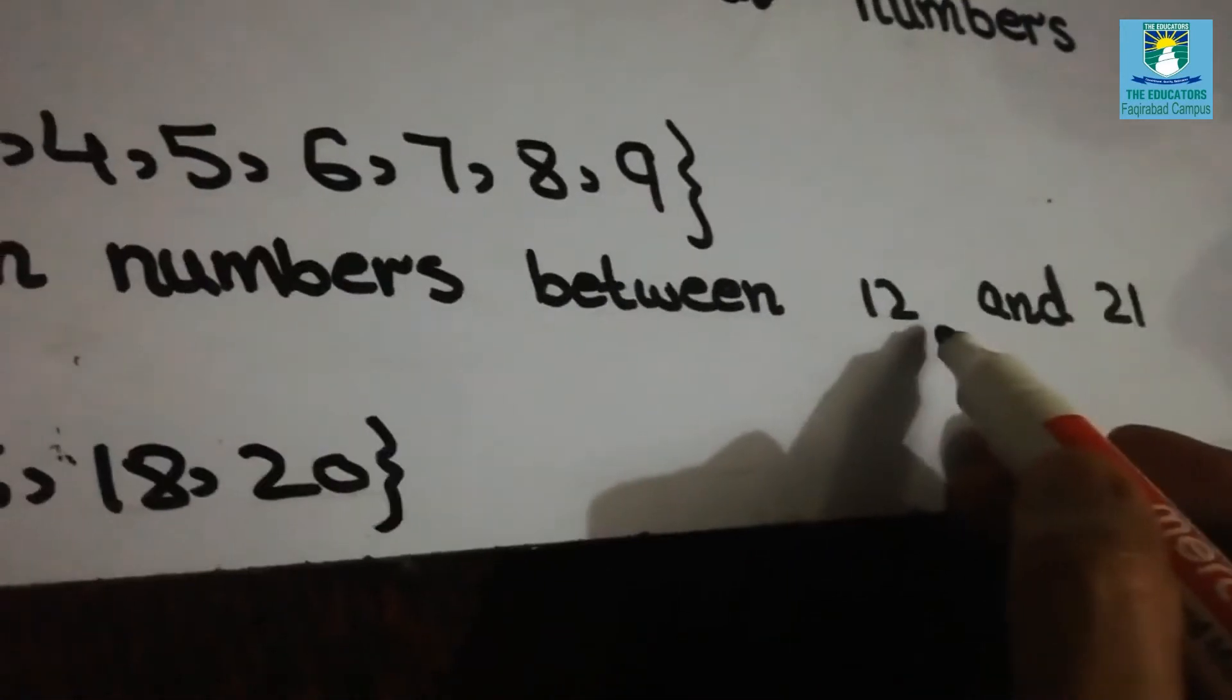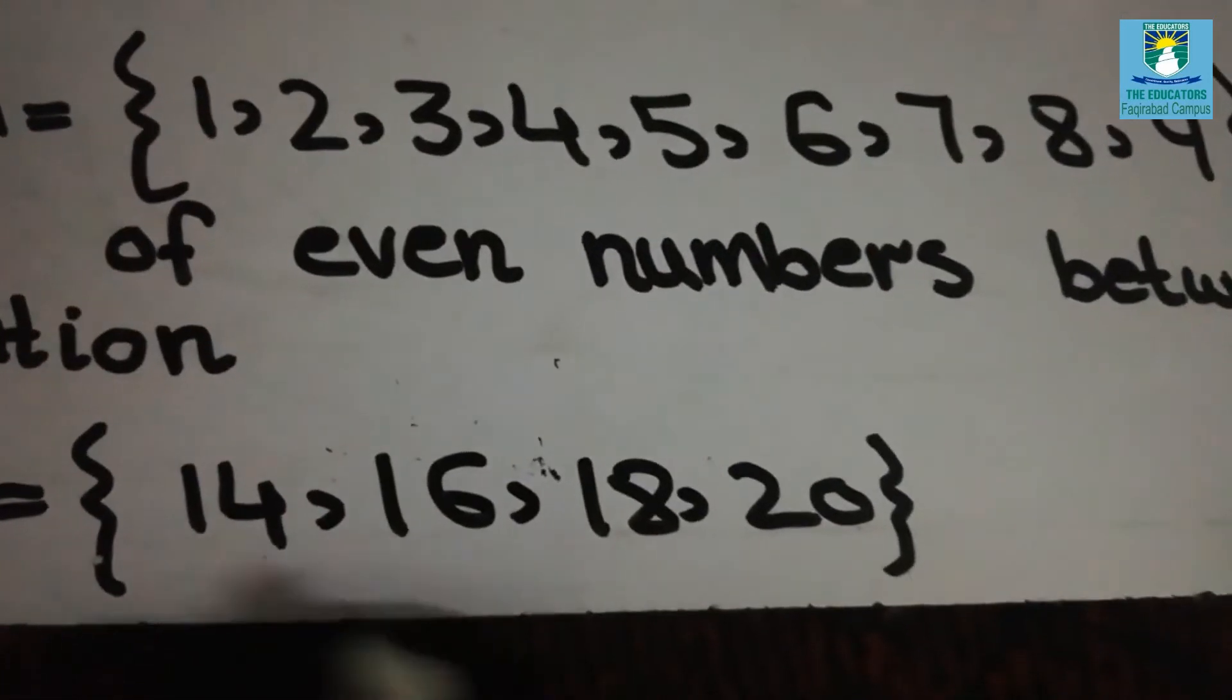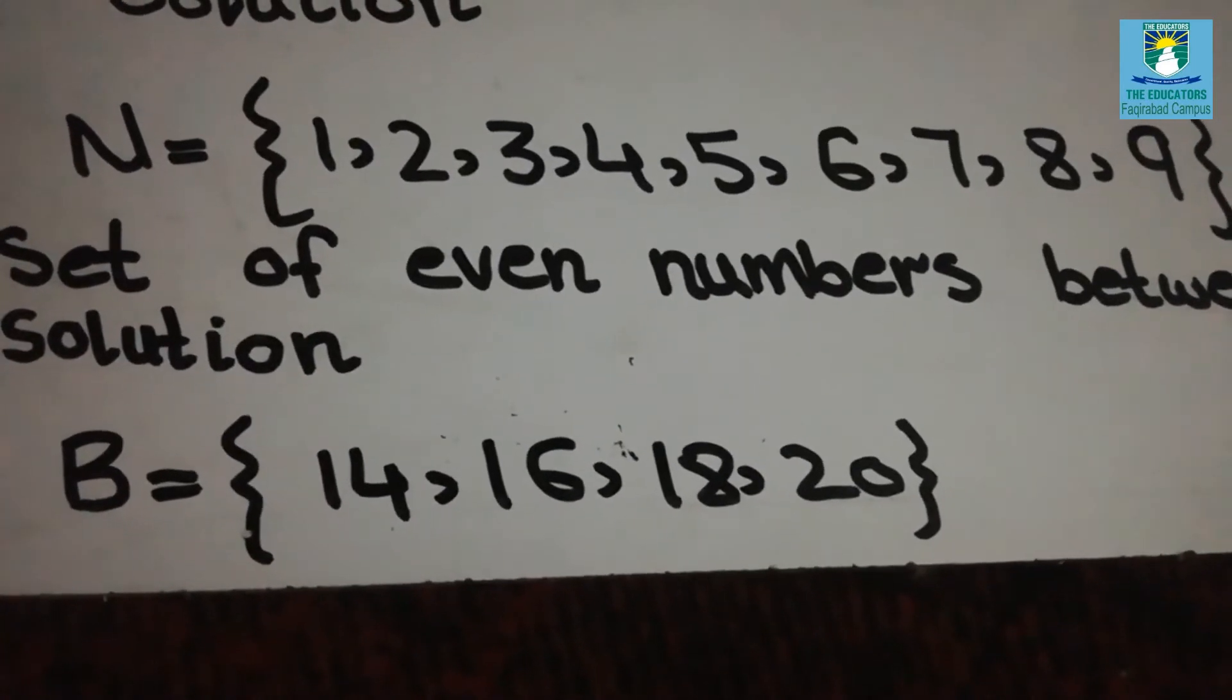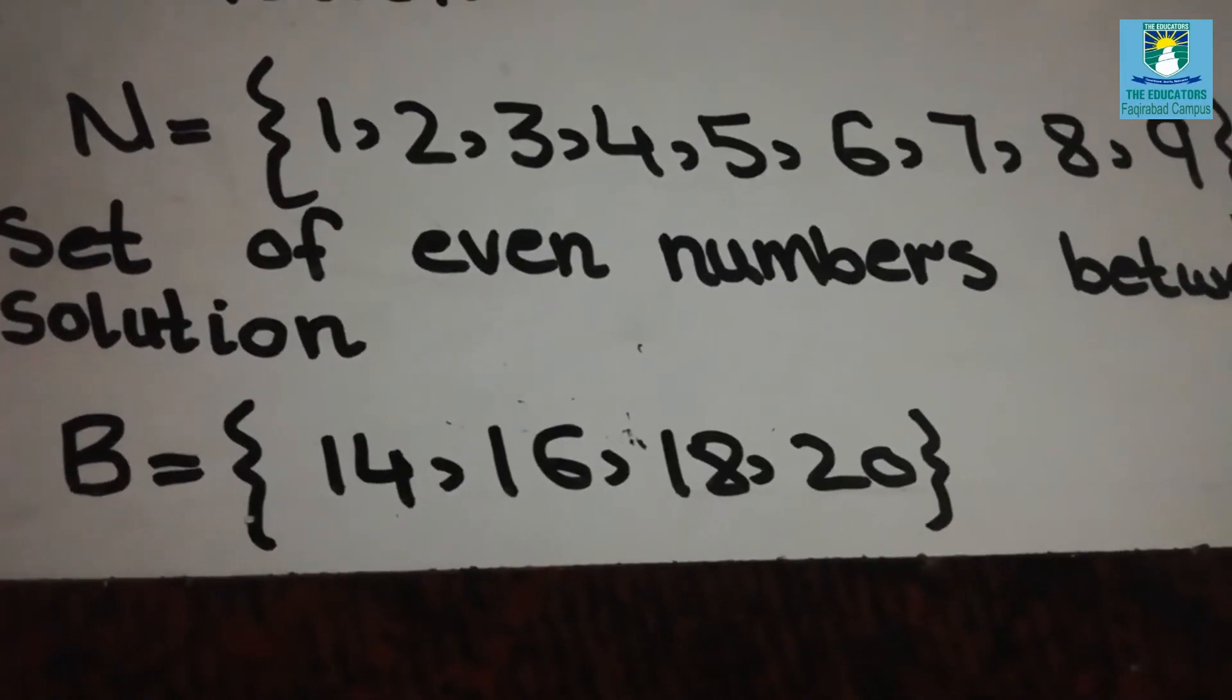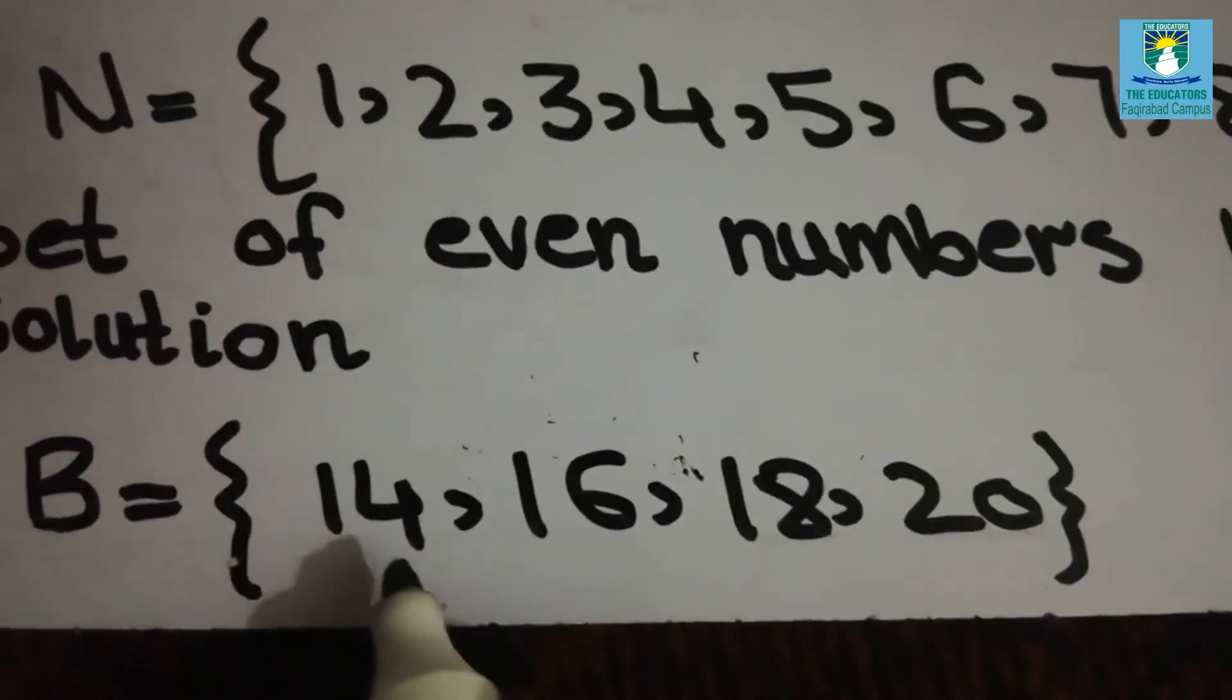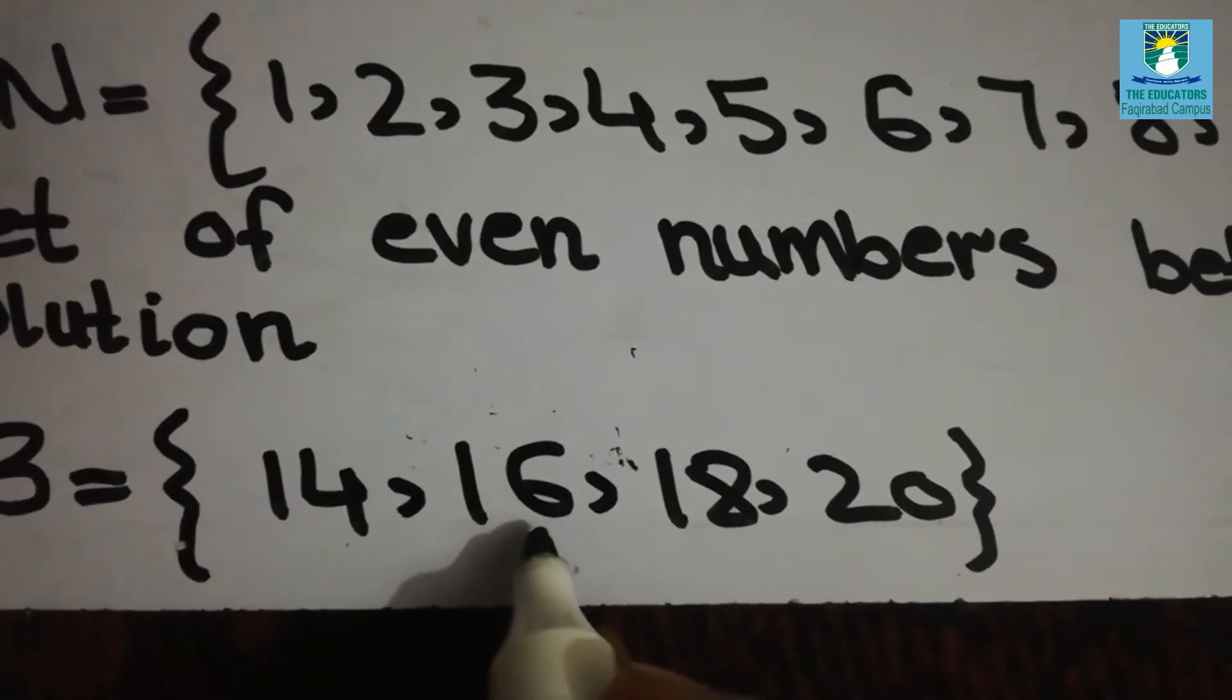Even numbers between 12 and 21. Even numbers are those numbers which can be divided by 2. So which even number will come after 12? 14. After 14, 16 will come.